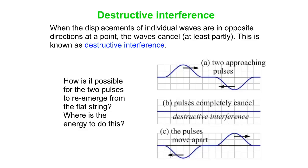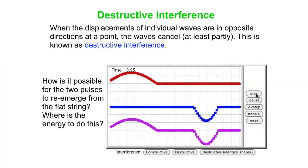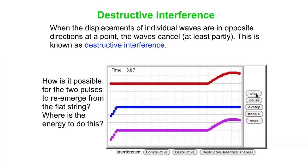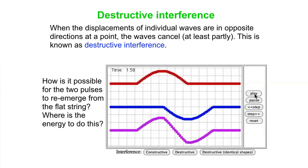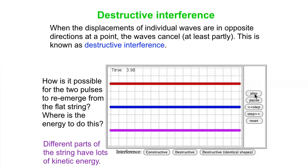How is it possible for the two pulses to reemerge from the flat string? Where's the energy to do that? Think about that question as you watch the animation. In the case of destructive interference with identical pulses, there's an instant where the string is flat, but there's lots of kinetic energy there — different parts of the string are moving at that point. So the energy to reconstitute those pulses comes from the kinetic energy of different parts of the string.